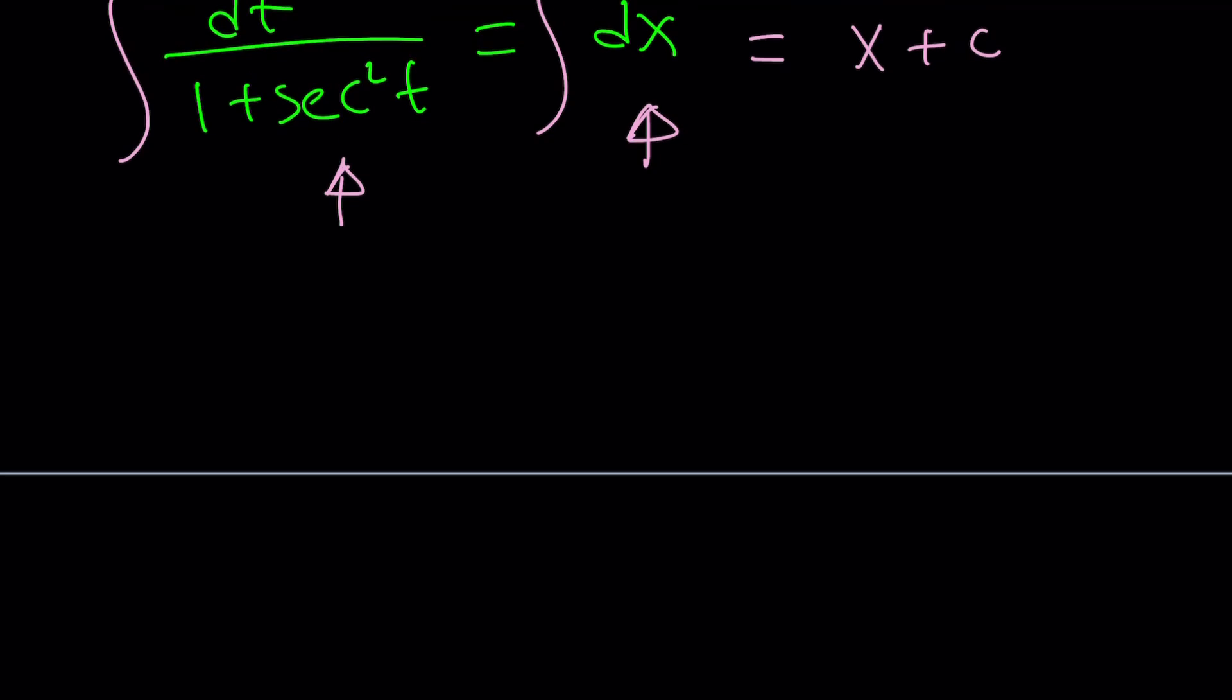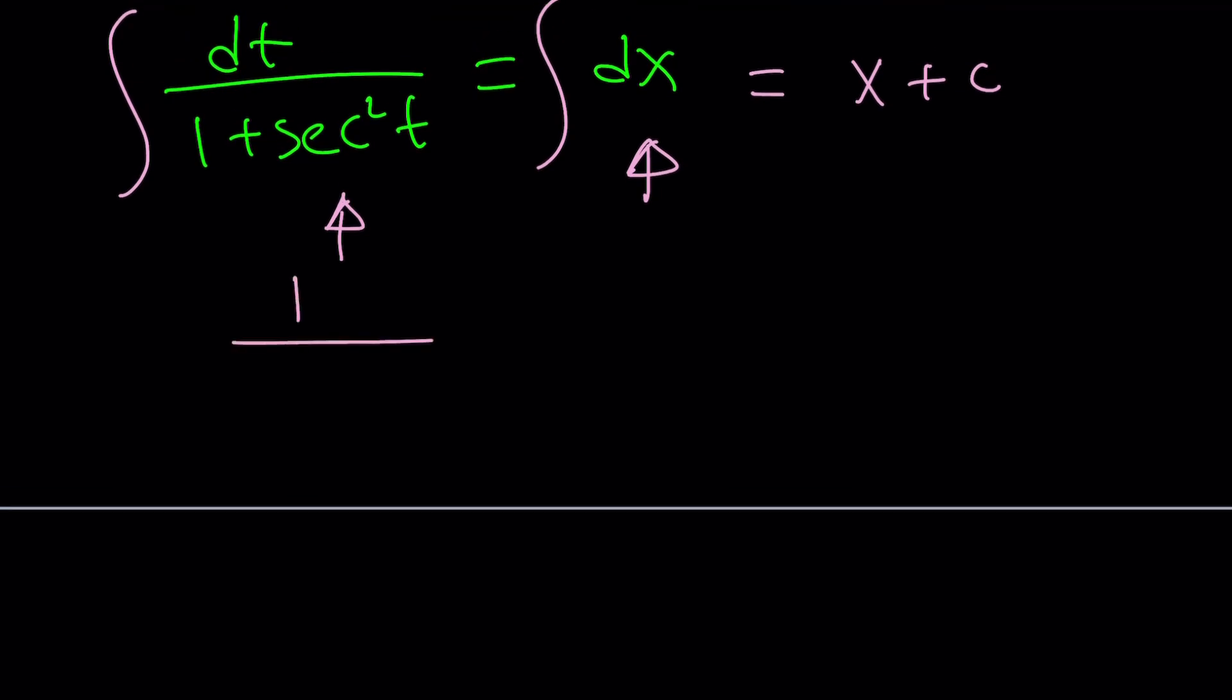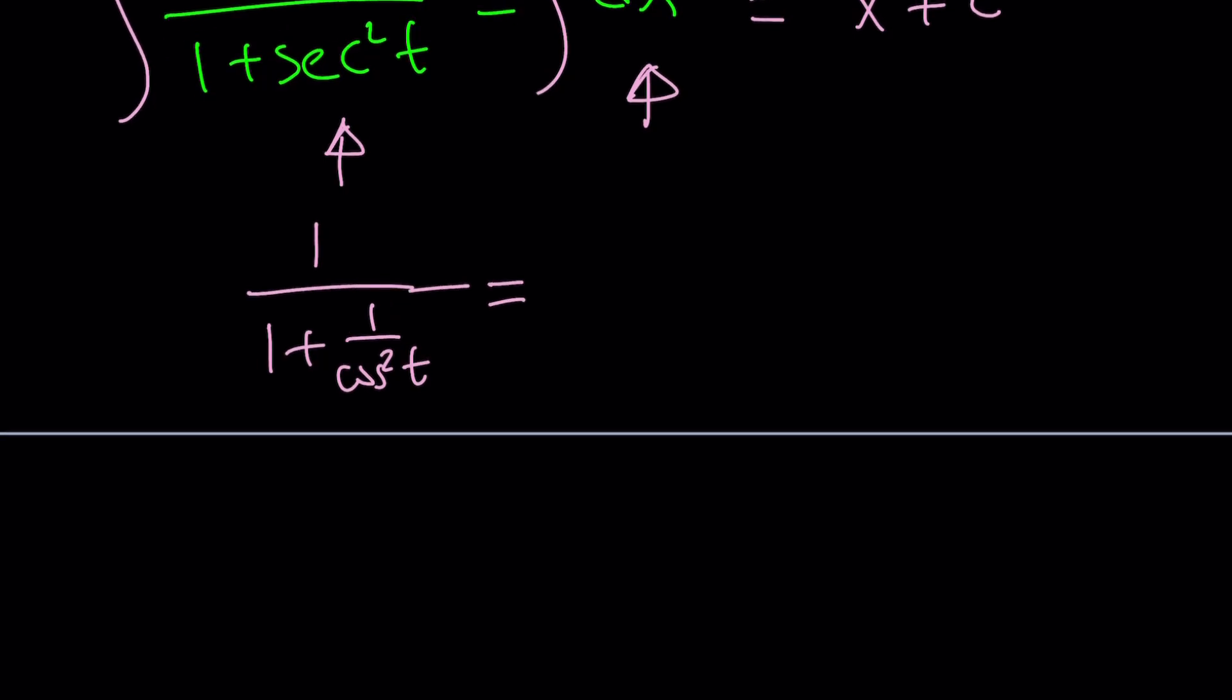How do we integrate dt/(1 + sec²t)? We can turn this into 1 over 1 + 1 + tan²t, because tan²t is probably going to be easier to handle. Another thought I had was to use sec²t, write it as 1/cos²t, because this should also give us something nice.